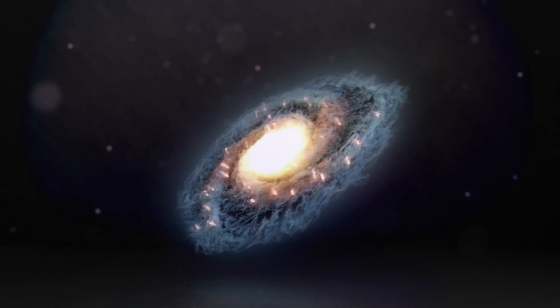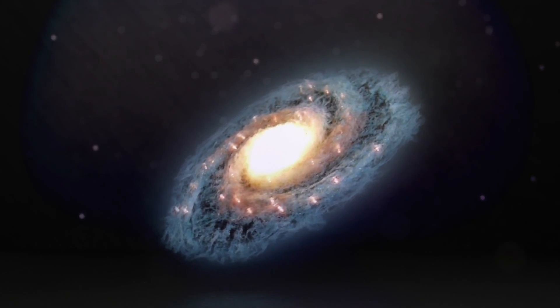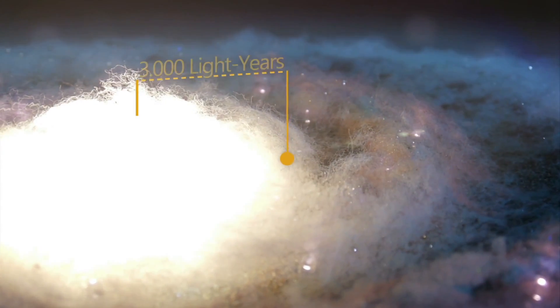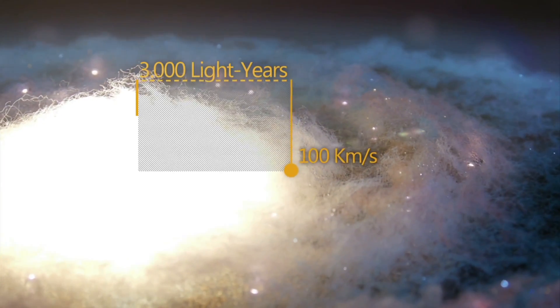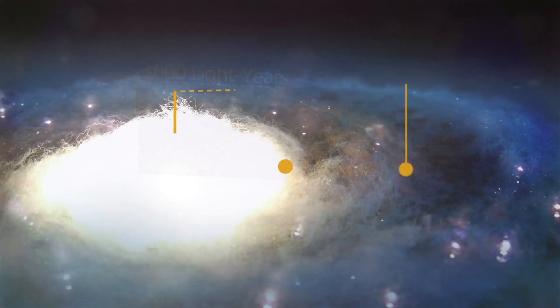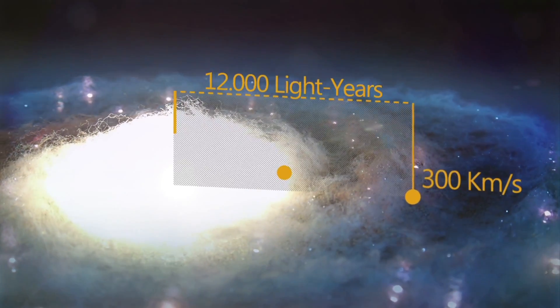Using these techniques, astronomers predict how fast stars at different distances from the center of the galaxy should move. Stars very close to the center move slowly because there is very little mass between them and the center of the galaxy to pull them along. Stars a bit further away move faster as they are being pulled by all of the stars in between them and the center.